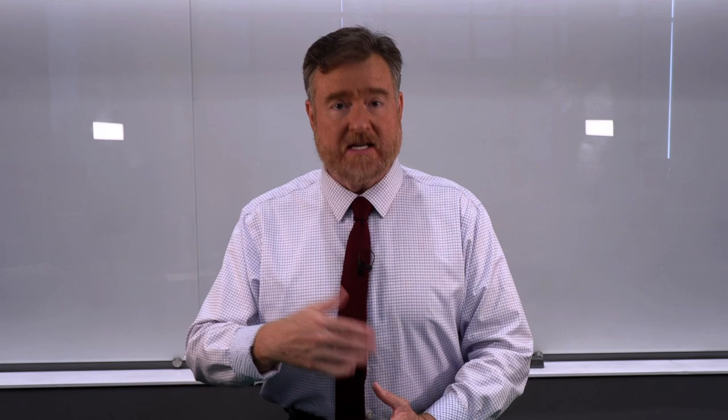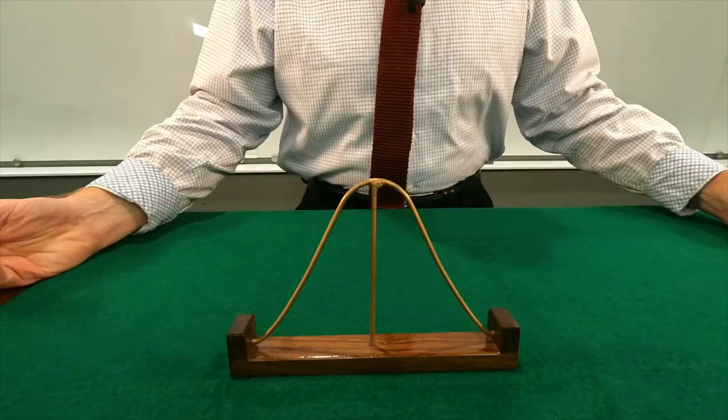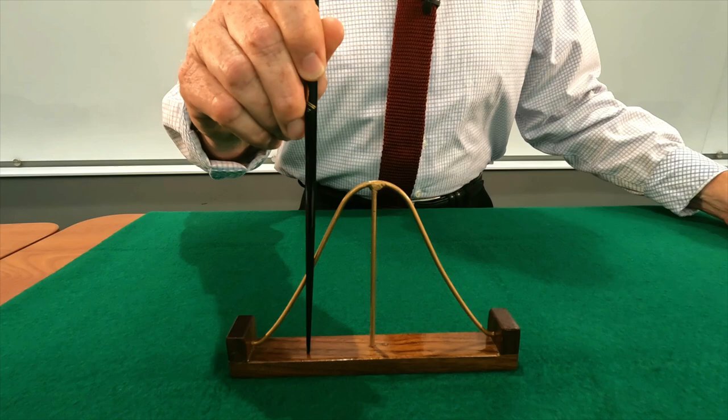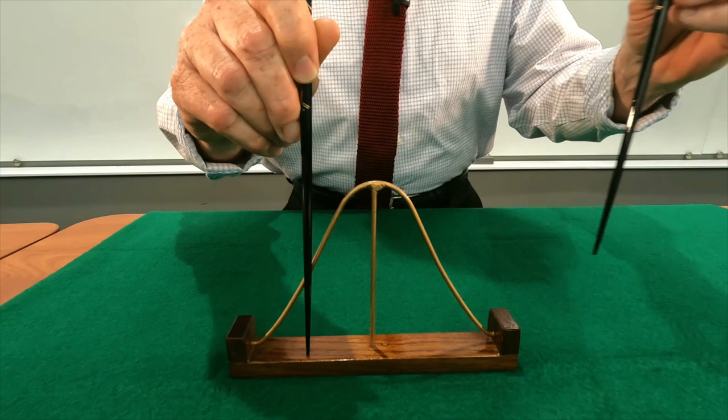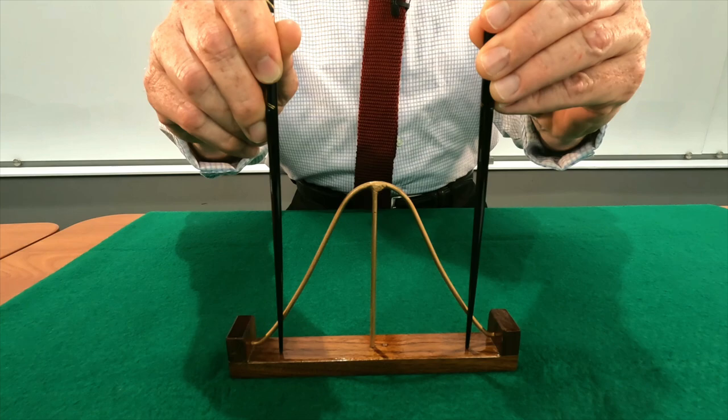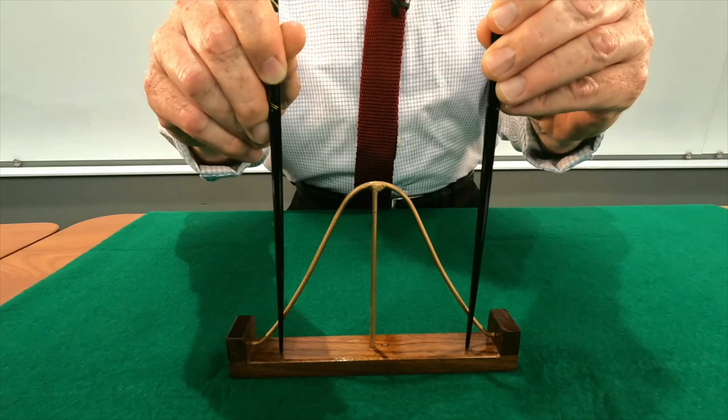Where that five percent of scores goes depends on whether you choose a directional or a non-directional alternative hypothesis. If you choose a one-tailed test, your five percent is on only one end of the bell curve. If you choose a two-tailed test, your five percent is divided equally between the two ends — 2.5% at either end of the curve.